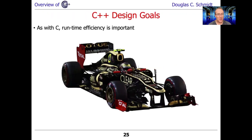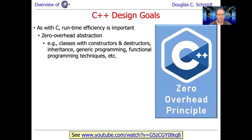As with C, which is one of the key starting points for C++, runtime efficiency — both in terms of time and space — is crucially important. That's honestly why people continue to use C++: it allows you to program lightweight abstractions that make it easier to write software and make humans productive without throwing performance out the window. One of the key themes in C++ is the concept of zero overhead abstraction and the zero overhead principle.